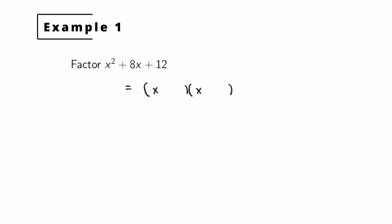Well, the answer is 6 and 2. 6 times 2 is 12. 6 plus 2 is 8. So we plug into those blanks positive 6 and positive 2. And that's it. If you check your work you'll see if you multiply that back out you will get x² + 8x + 12.